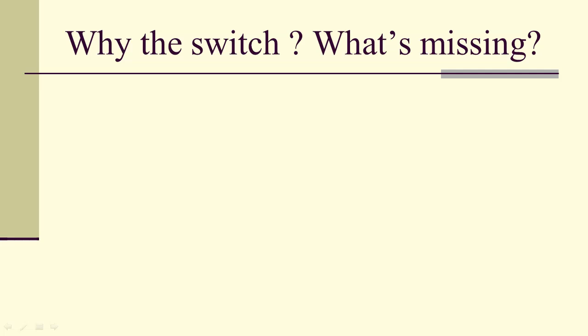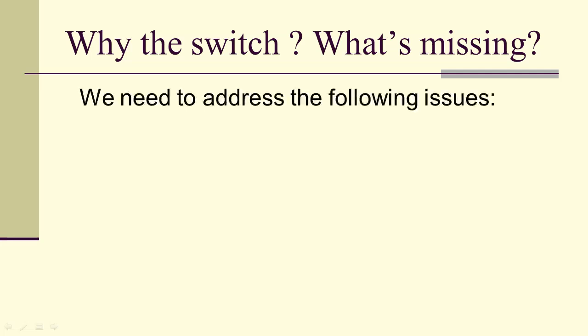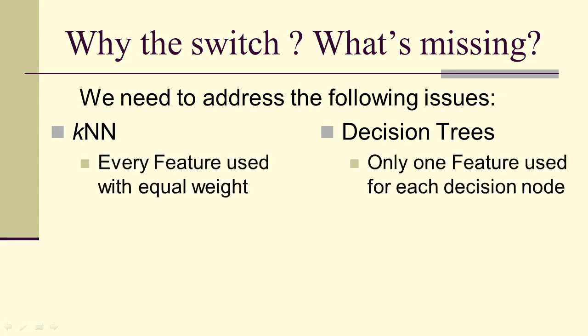So why the switch? What's missing? Well, we have to address a couple of issues. In k-nearest neighbors and decision trees, we saw the k-nearest neighbors, every feature was used with equal weight, just think of cosine similarity.